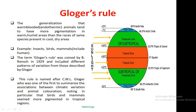The term Gloger's Rule was first coined in 1929 on the basis of different patterns of variation. This rule is named after C. W. L. Gloger, who was one of the first to summarize the association between climate variation and animal coloration. He observed that in particular areas, some birds and mammals appear more pigmented in tropical regions compared to other geographical locations.